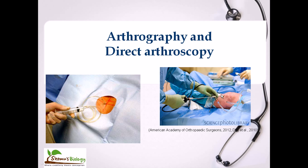In direct arthroscopy, we insert a probe-like structure directly into the joint. Using a laparoscopic tool with a miniature camera, we can see what is going on inside on a screen, or take out tissue samples from the joints, or take out synovial fluid using a syringe — this tells us exactly what is going on in the joint. The benefits of direct arthroscopy are that it is minimally invasive, causes less tissue damage, has fewer complications, reduced pain, and quicker recovery time compared to arthrography.